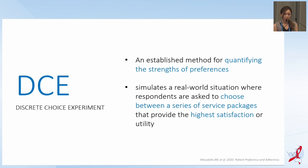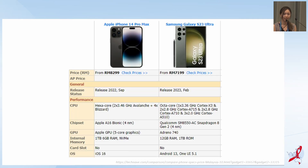DCE, or Discrete Choice Experiments, is an established method for quantifying the strength of preferences. This method simulates a real-world situation where respondents are asked to choose between a series of service packages that provide them with the highest satisfaction. Here's an example of DCE in daily life: when people want to buy a new phone, they compare between different phones, their specifications, prices, and brand, and then pick the phone that provides the highest satisfaction.